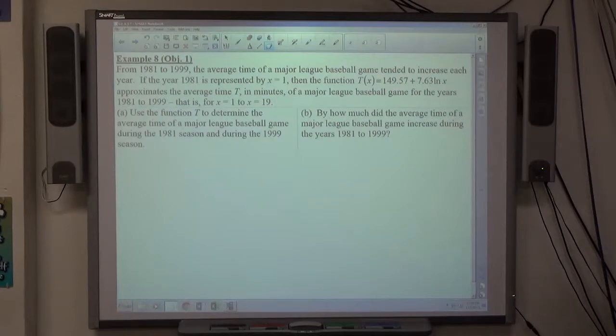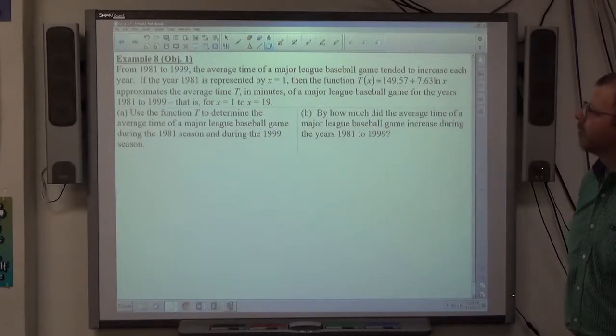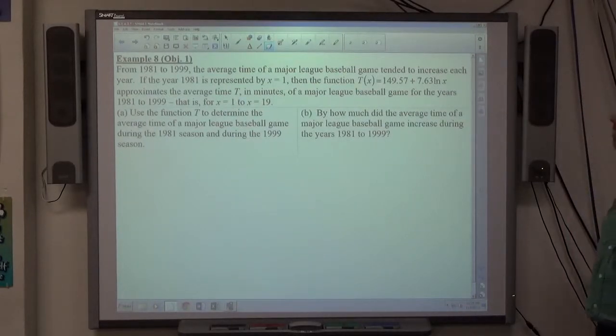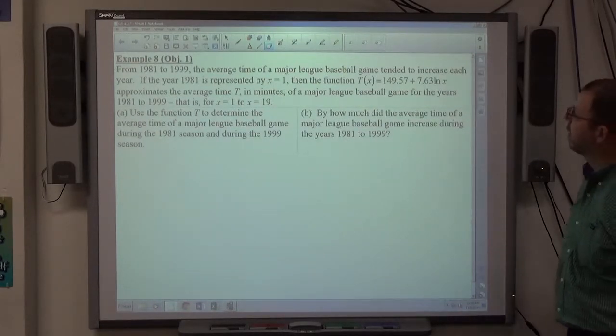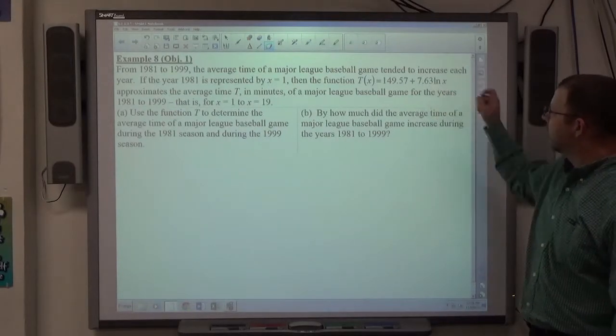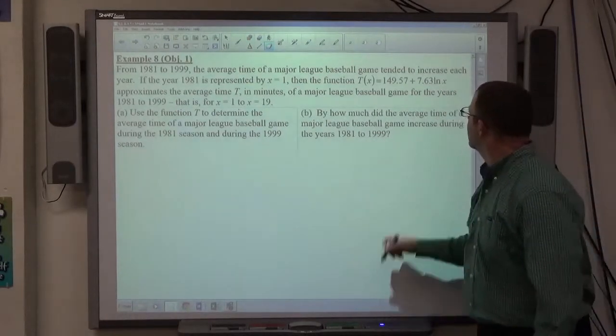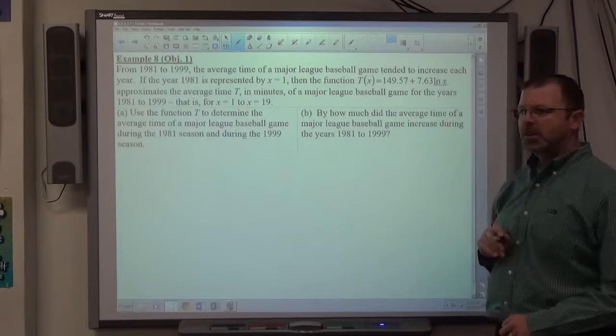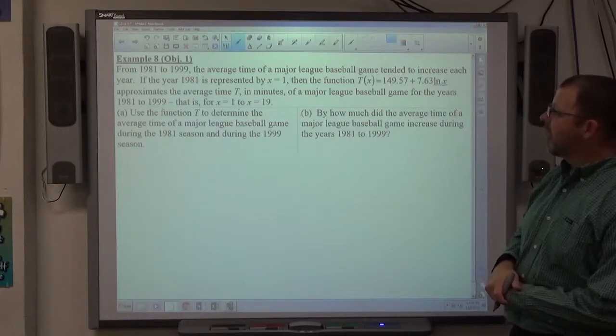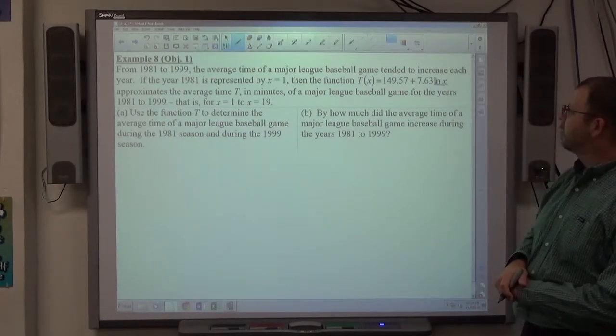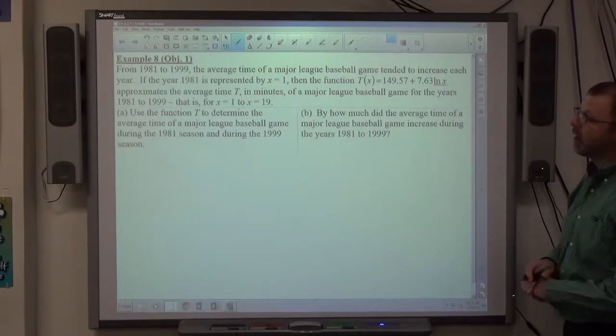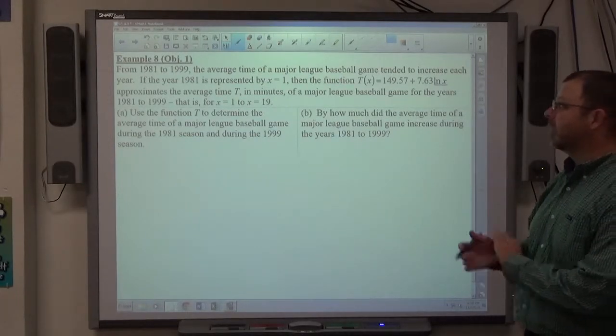From 1981 to 1999, the average time of a Major League Baseball game tended to increase each year. If the year 1981 is represented by x equals 1, then the function t(x) equals 149.57 plus 7.63 natural log of x. Remember, natural log is log base e. This approximates the average time t in minutes of a Major League Baseball game for the years 1981 to 1999.